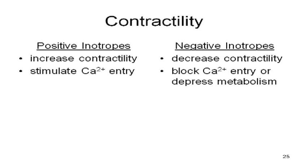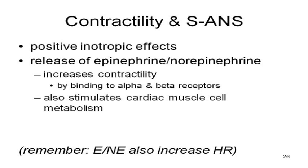Negative inotropes make the heart beat not as strongly. They work in two ways: they can block calcium entry, or they can depress metabolism so that less ATP is generated — and without ATP, you can't generate as much force. Epinephrine and norepinephrine, released by the sympathetic autonomic nervous system, speed up contractility by binding alpha and beta receptors and increasing calcium going into the cells.